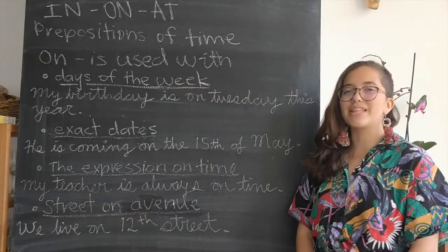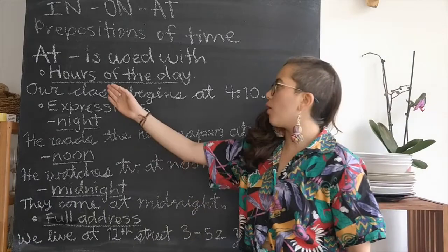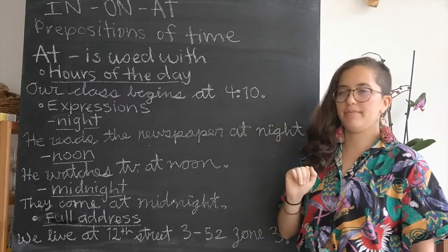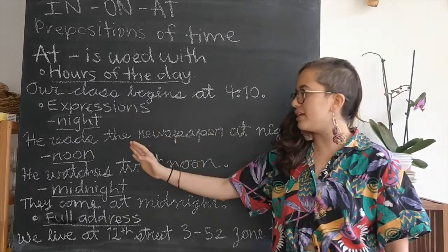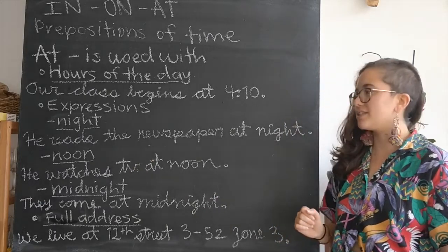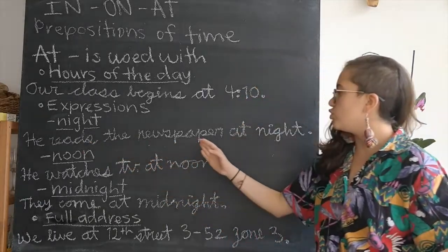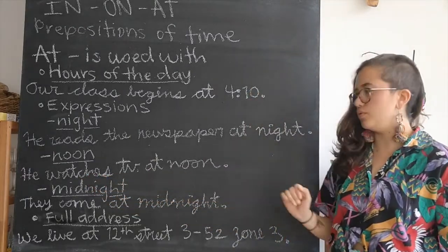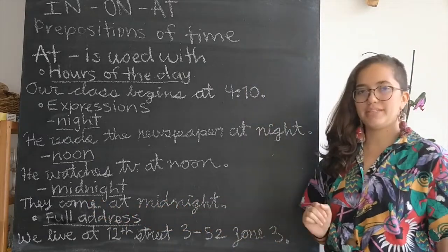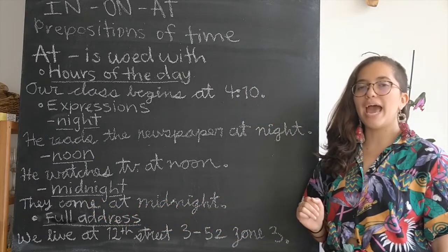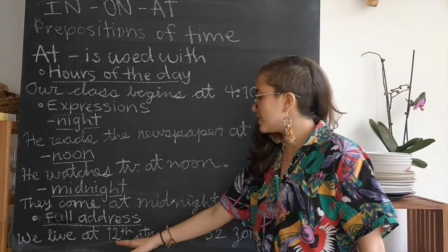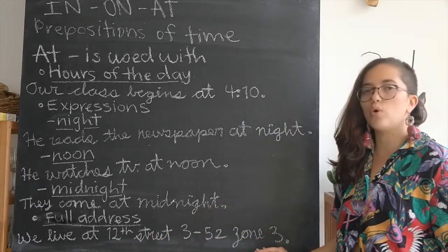Now let's look at the final preposition at. At is used with hours of the day, so we would say our class begins at 4:10. With the expressions night, noon and midnight, we also use at. We would say he reads the newspaper at night, he watches TV at noon, they come at midnight. And the last way we can use at is with full addresses, so we would say we live at 12th street 352 zone 3.